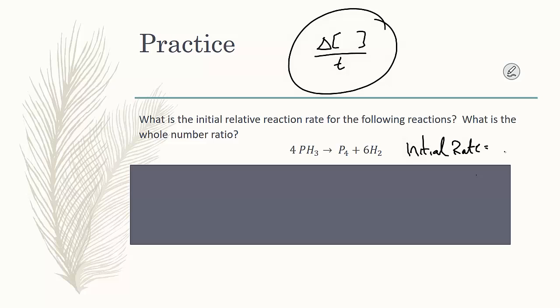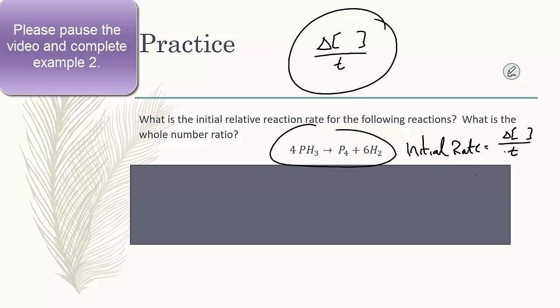By saying the change in the concentration of something over time, but using the stoichiometric coefficients here, and whether it's positive or negative, let's see if you can write the initial rate for each one. So, pause the video and write the initial rate.